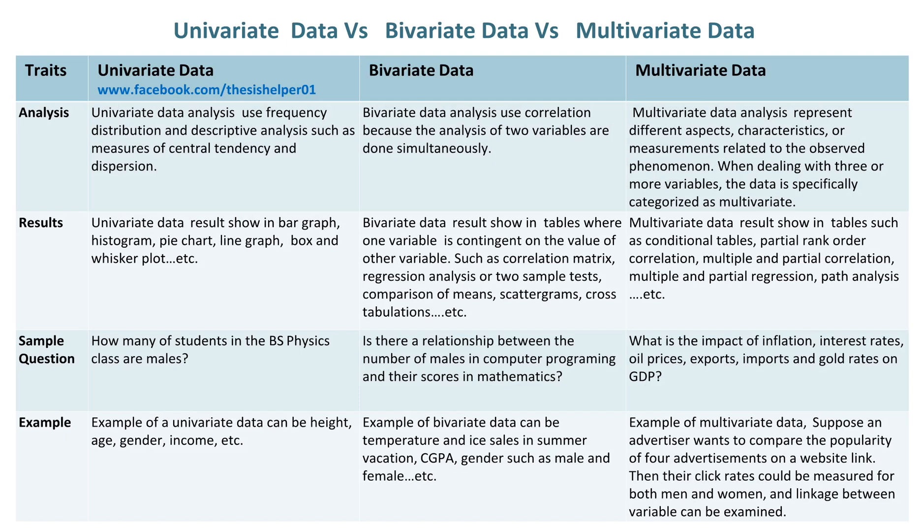Univariate data analysis uses frequency distribution and descriptive analysis, such as measures of central tendency and dispersion. Whereas bivariate data analysis uses correlation, because the analysis of two variables is done simultaneously.